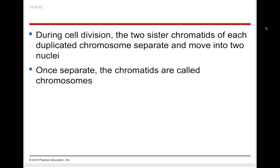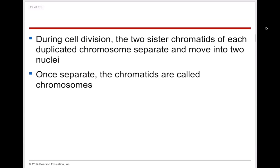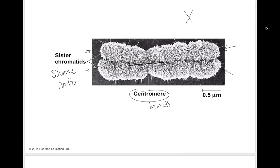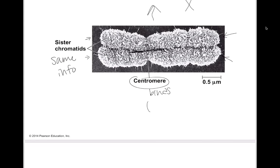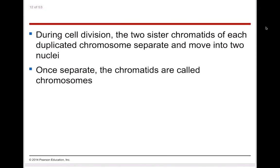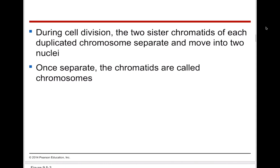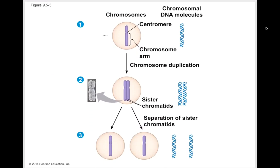During cellular division, the two sister chromatids of each duplicated chromosome separate and move into two nuclei. Once they're separate they're also called chromosomes. So you start with a chromosome, duplicate it in S phase to get sister chromatids held together by the centromere, and then those are separated into two different nuclei — and those separated units are again called chromosomes.